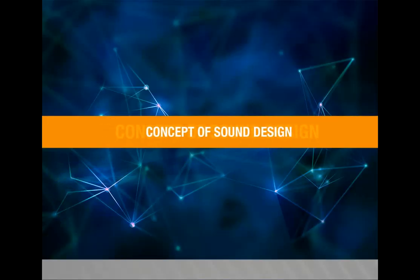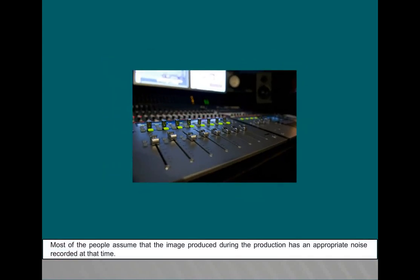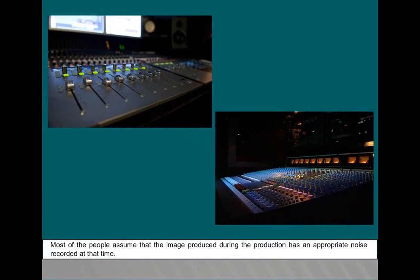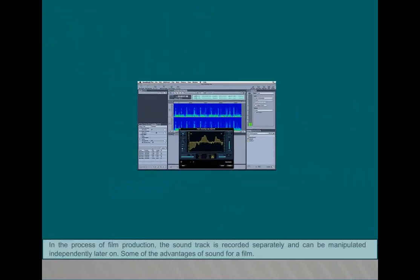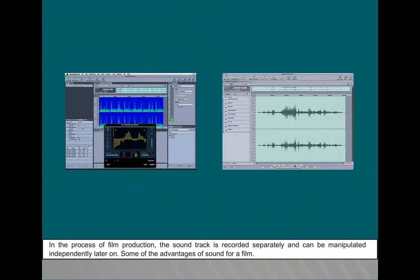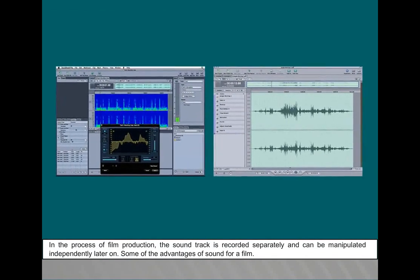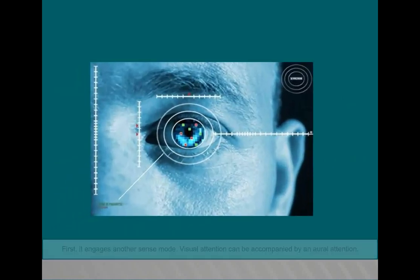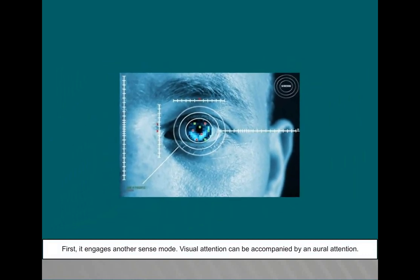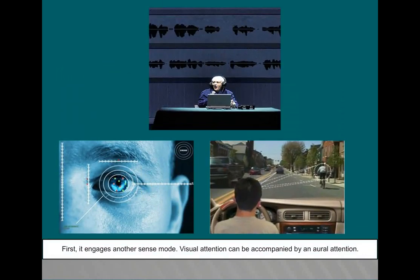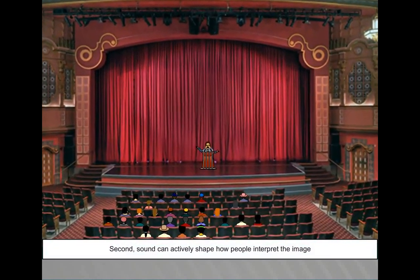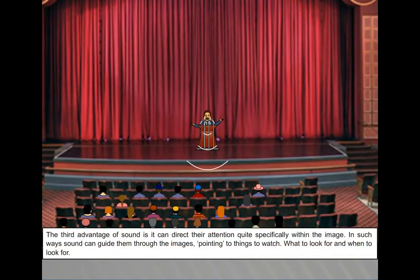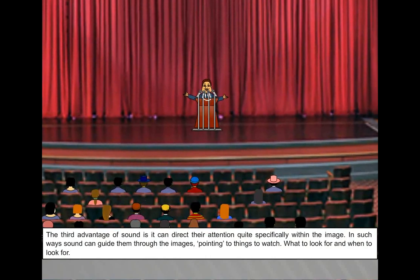Most people assume that the image produced during production has an appropriate noise recorded at the time. In the process of film production, the soundtrack is recorded separately and can be manipulated independently. Advantages of sound for a film: first, it engages another sense mode — visual attention can be accompanied by aural attention. Second, sound can actively shape how people interpret the image. Third, sound can direct their attention quite specifically within the image, guiding them through what to watch, what to look for, and when.